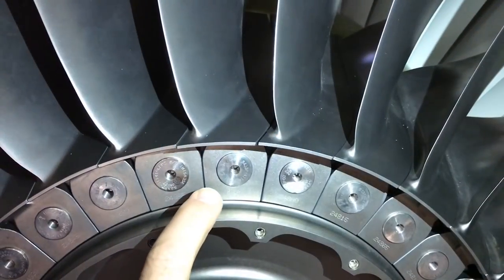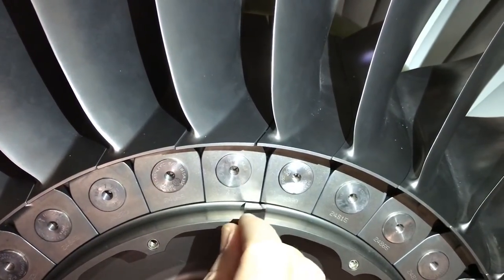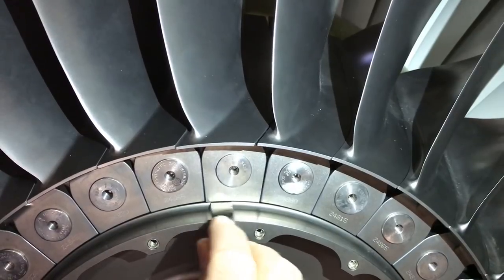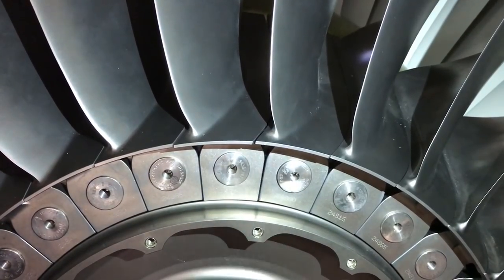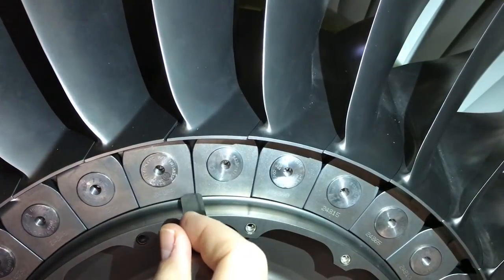When performing the shim check during the bumper sizing procedure, it is important to check both sides of the fan blade for proper shim clearance. Make sure to push the fan blade to the left and to the right to verify you have proper shim clearance. Note this fan blade fails the shim check for both sides.